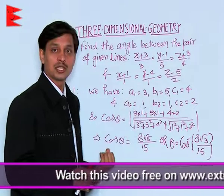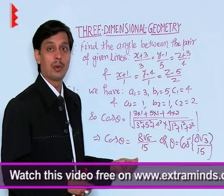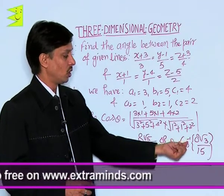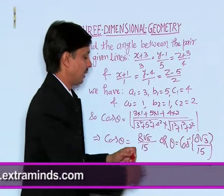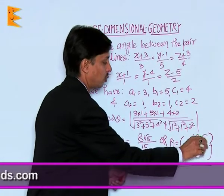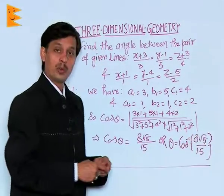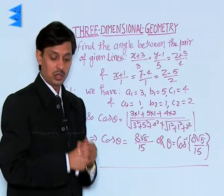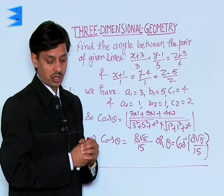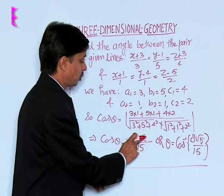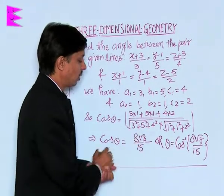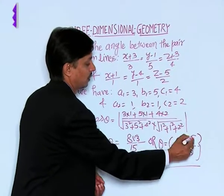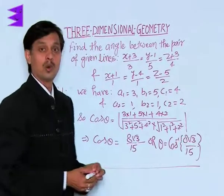So ultimately this calculation gives us cos theta equals 8 root 5 upon 15. Hence, you can say theta equals cos inverse of 8 root 5 upon 15. That is the answer or the angle between the two lines which we need to calculate. If you calculate it, you will get 8 root 3 upon 15, or theta equals cos inverse of 8 root 3 upon 15.